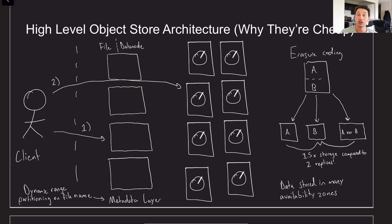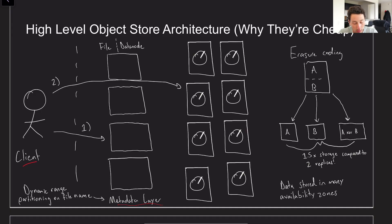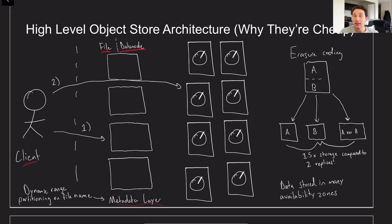Let's quickly go over a high-level object store architecture. This isn't publicly exposed by any of these providers, but Dropbox made an article on their in-house object store and I think all of them are more or less similar. Basically, we have a client and a dedicated metadata layer, where the metadata layer is like a typical key-value store distributed database. It stores a mapping from files to the data nodes they live on. The metadata layer is going to be gigantic since everyone uses the same S3, so it does some sort of partitioning on file names — in the case of S3, they imply it's based on a particular prefix of the file name.